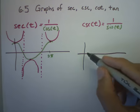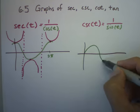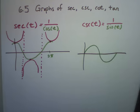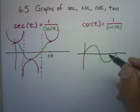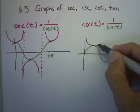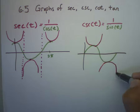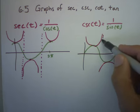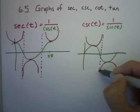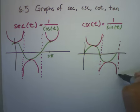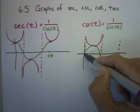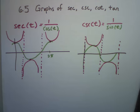You can start with what the graph of sine looks like, say sine looks like that, and therefore cosecant is going to bounce off of that. So it's going to have a loop that looks like this and a loop that looks like that. And everywhere that sine is zero, cosecant will have an asymptote. So those are your basic graphs of secant and cosecant.